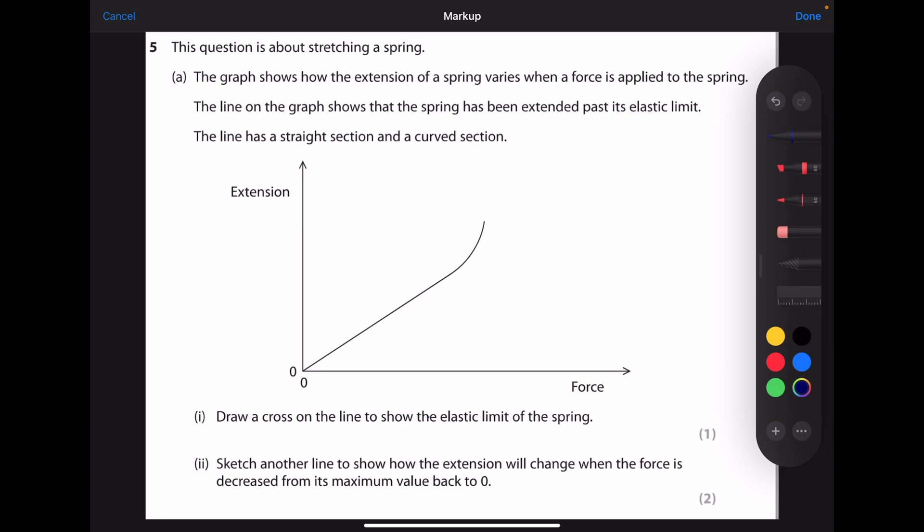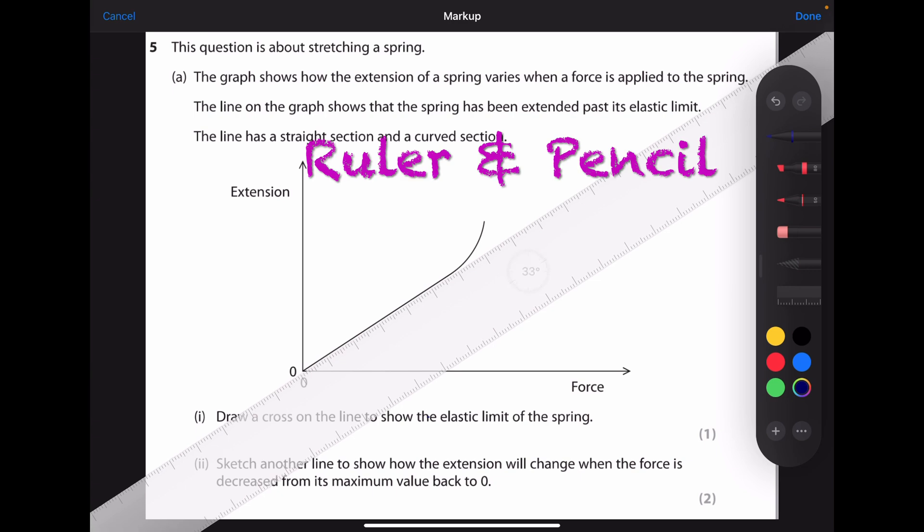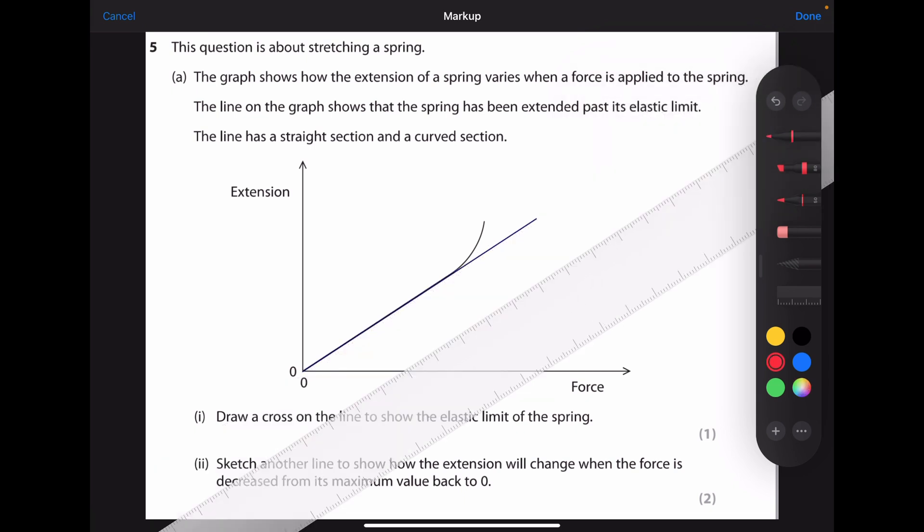To find this point on the line graph, use your ruler and pencil and then draw another straight line on the drawn line.